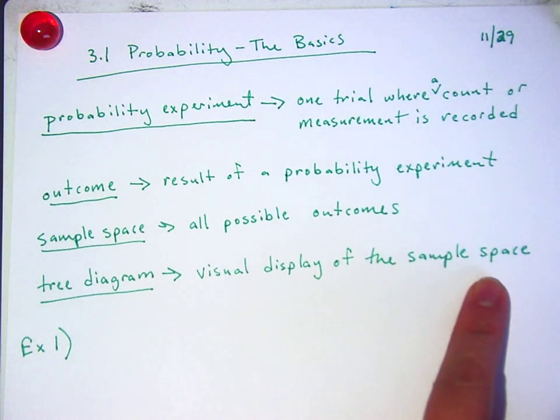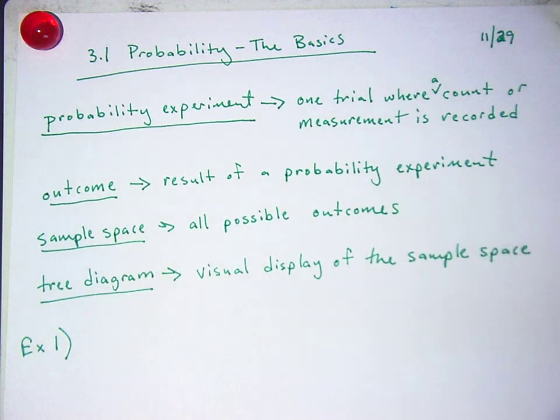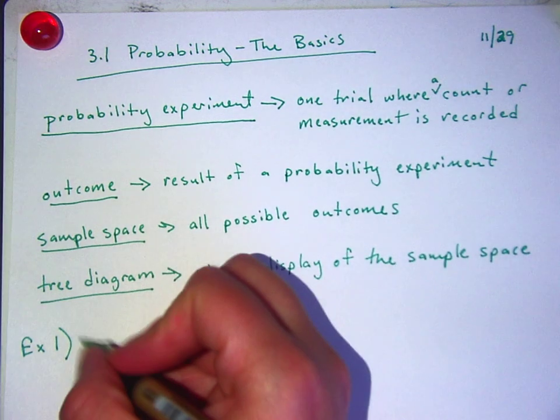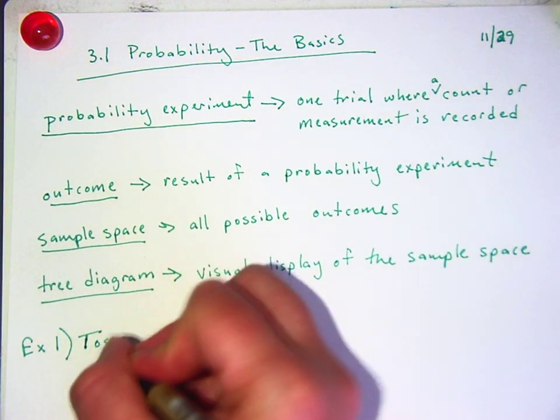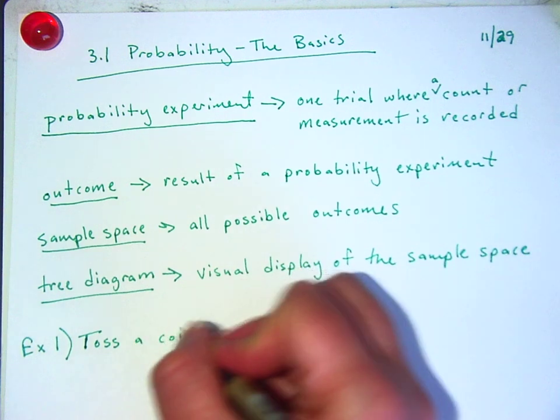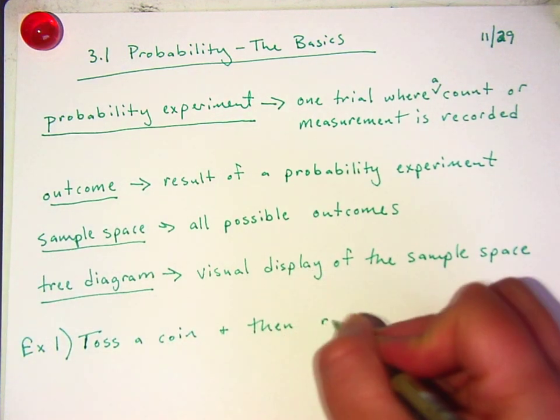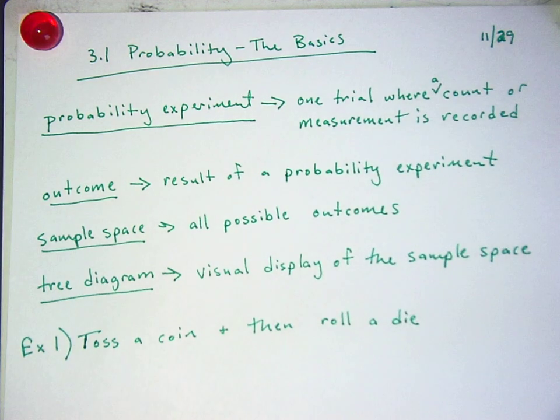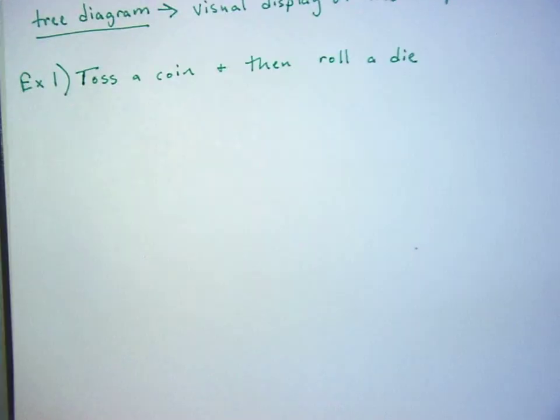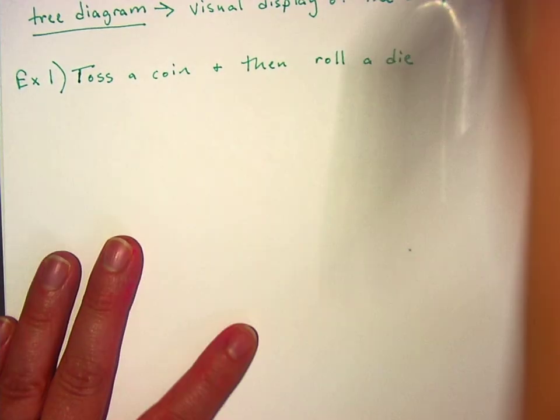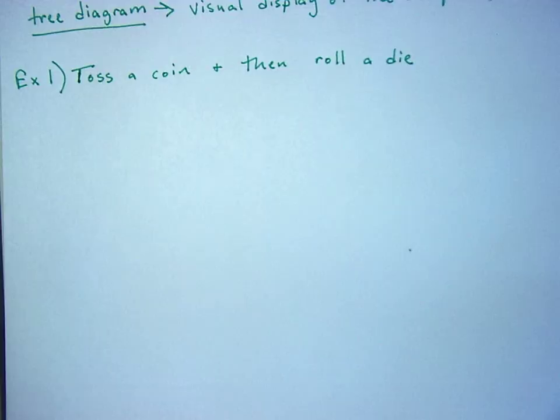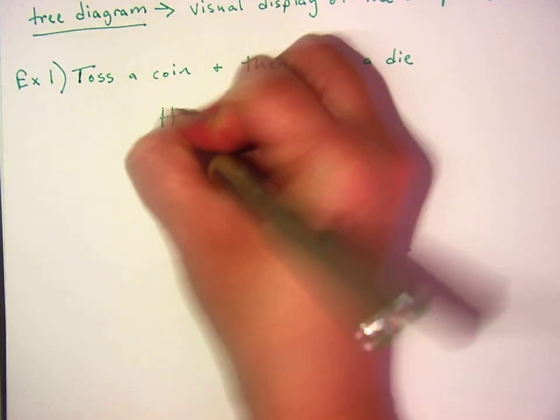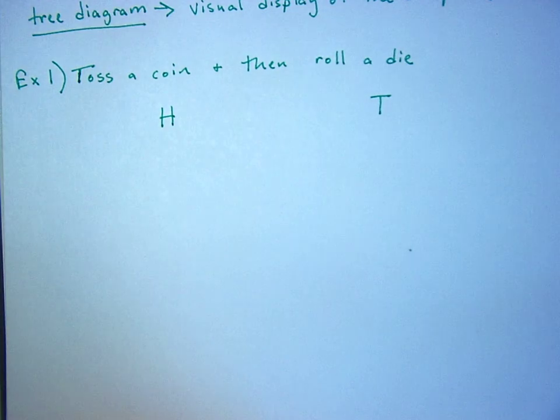Tree diagram is a visual display of your sample space, which is very helpful when you have more than one event happening. For example, let's say that you toss a coin and then roll a die. This is something that people get confused with a lot, so we're going to take it nice and slow. What are the options when you flip a coin? Heads or tails. I want you to write heads on one side and tails over here a little bit.